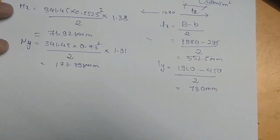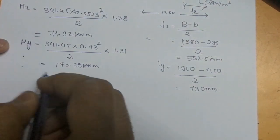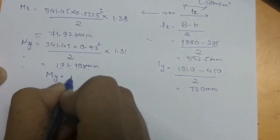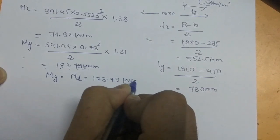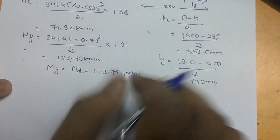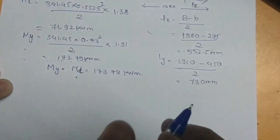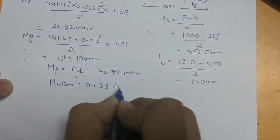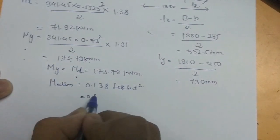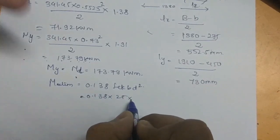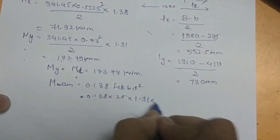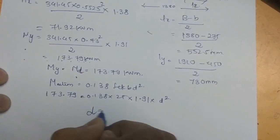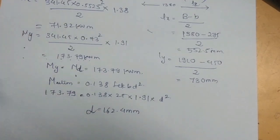Comparing the two moments, My (173.79 kNm) is greater than Mx (71.92 kNm), so My is used as the design moment MD = 173.79 kNm. To find the required depth from bending moment, we equate MD to the limiting moment: 0.138 × fck × b × d² = 0.138 × 25 × 1910 × d², which gives d = 162.4 mm.